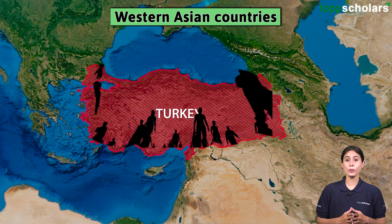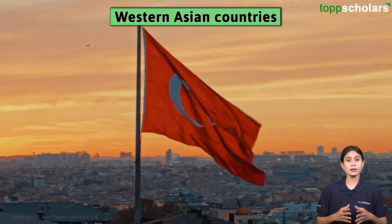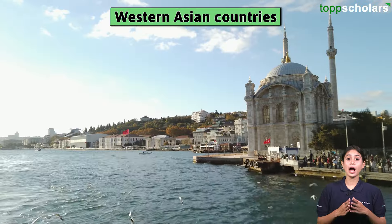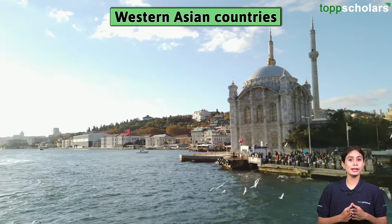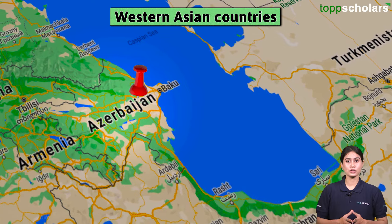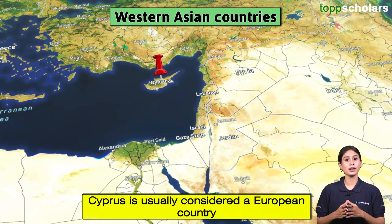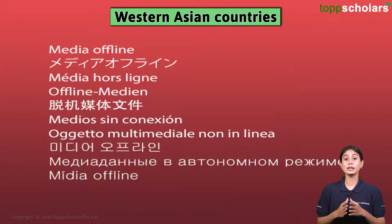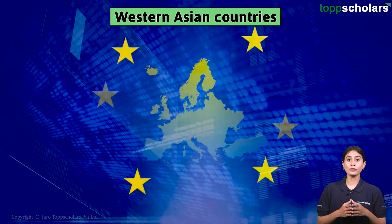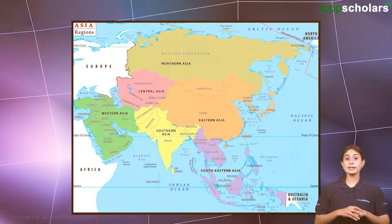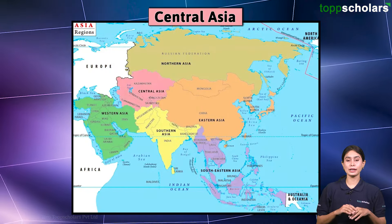Turkey has a population of over 84 million. It is a transcontinental country, with other transcontinental countries in Western Asia including Georgia and Azerbaijan. Cyprus is usually considered a European country from political and economic perspectives, and is even part of the European Union.